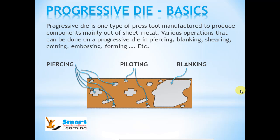In a Progressive Die, a strip will progress from one station to another, thus the name Progressive Die. In each station a different press tool operation is done such as piercing, blanking, shearing, coining, embossing, etc.